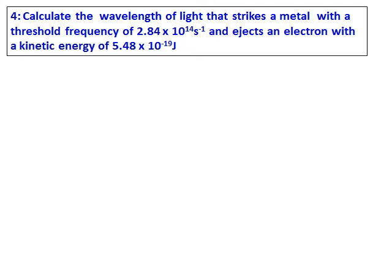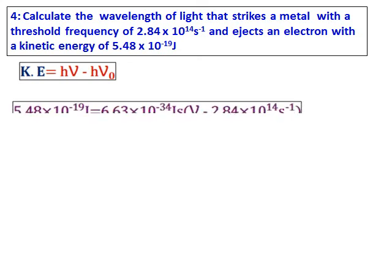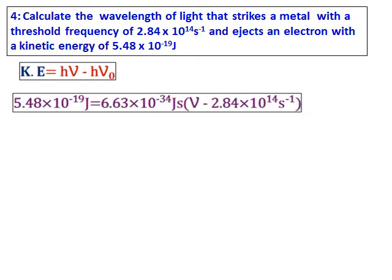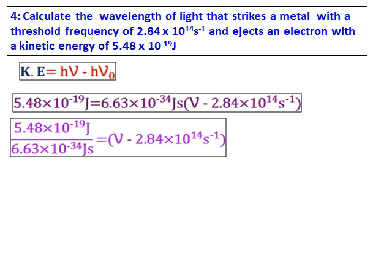Calculate the wavelength of light that strikes a metal with a threshold frequency of 2.84 x 10^14 s^-1 and ejects an electron with a kinetic energy of 5.48 x 10^-19 J. We are going to use the same equation. In this case, nu 0 is given and they asked to find the wavelength of the light.